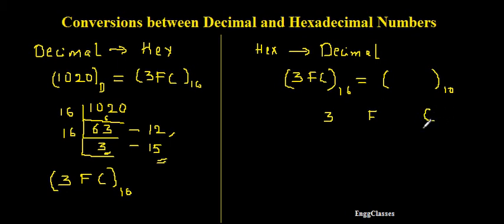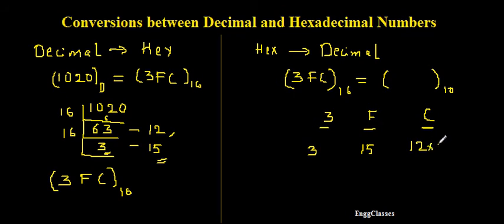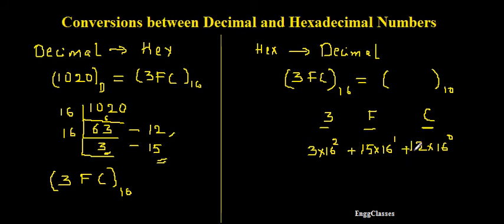To find the decimal equivalent of 3FC, I first write the decimal value of each individual hex digit. C in hexadecimal is 12 in decimal. F in hexadecimal is 15 in decimal. 3 in hexadecimal is 3 in decimal. Next I multiply each digit by a power of 16: the rightmost digit by 16 to the power 0, the next by 16 to the power 1, and the leftmost by 16 to the power 2. Then I add all three results.